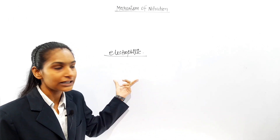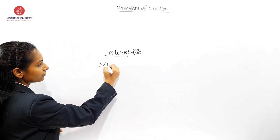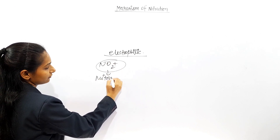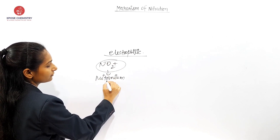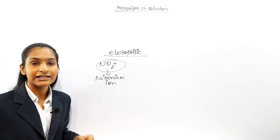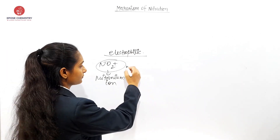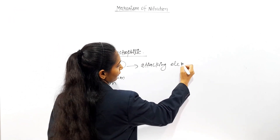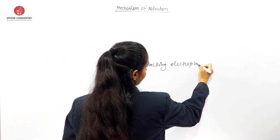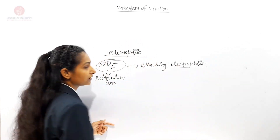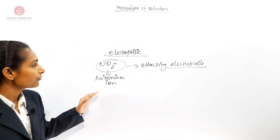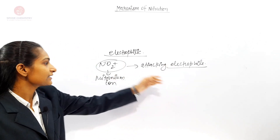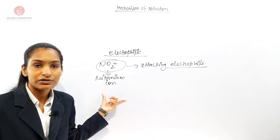Electrophilic. And here, the generation of NO2 positive — the Nitronium ion — is the Attacking Electrophile. So Nitration of aromatic compounds is Electrophilic in Nature and involves the Attacking Electrophile that is NO2 positive Nitronium ion.